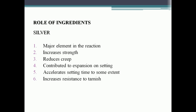Silver is the major element in the reaction. It increases the strength and reduces the creep. Creep is the time-dependent plastic deformation that occurs when a metal is subjected to a constant load near its melting point. Silver reduces creep, contributes to expansion on setting, accelerates setting time to some extent, and increases resistance to tarnish.